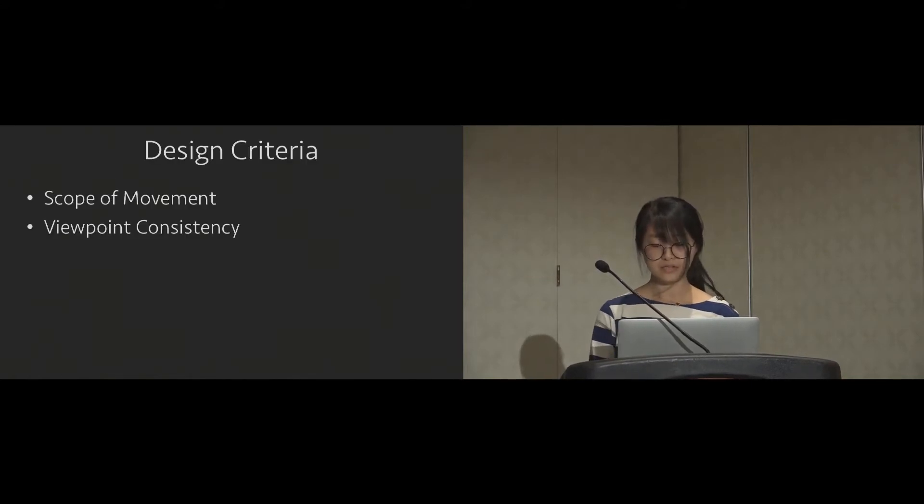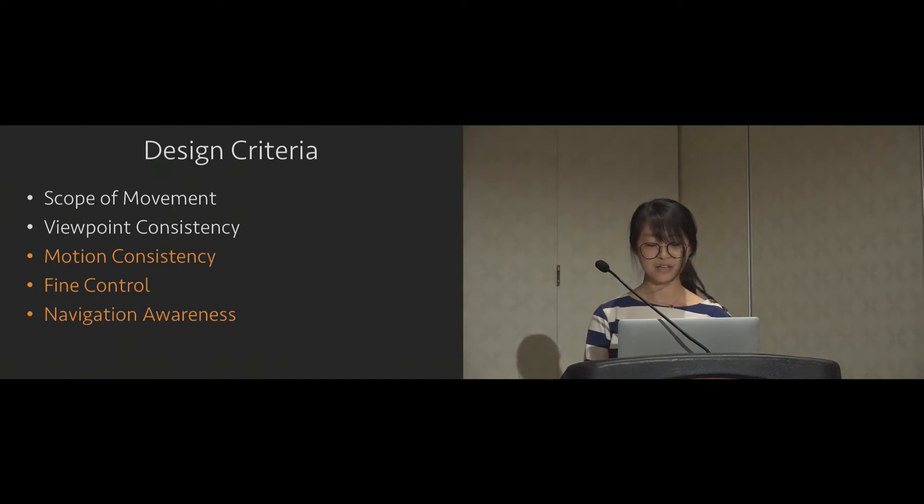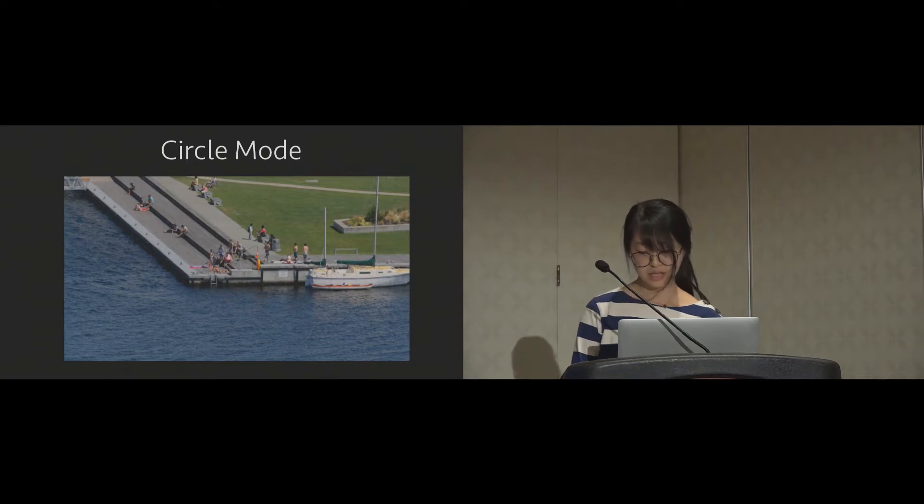Based on those downsides, we then identified three more properties for a desired pan-and-zoom viewer in VR. The display should match well with the viewer's perceptual movement to reduce motion sickness. Additionally, users should be able to control where they want to and expect it to see. And finally, the interface should help user to navigate in the scene.